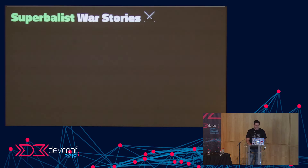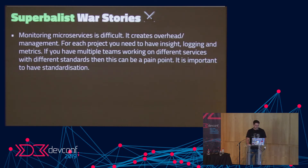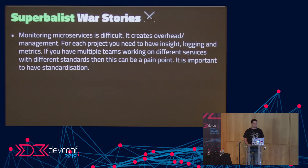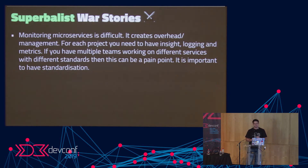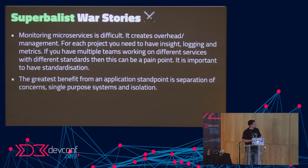I asked my coworkers for feedback around what they thought when we moved from monoliths to microservices. Monitoring microservices is very difficult — it creates overhead and management. If multiple teams work on different services without correct standardization practices, logs end up in different places. It's very important to have standardization for your microservices. The greatest benefit from an application standpoint is isolation, separation of concerns, and ending up with a single-purpose system.